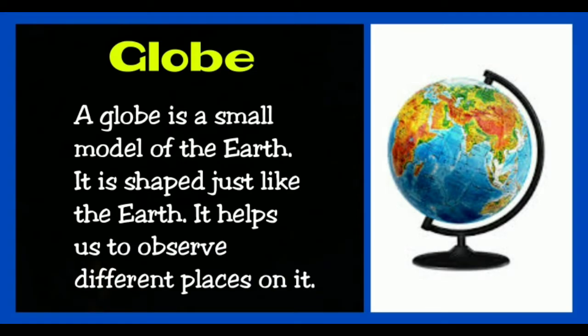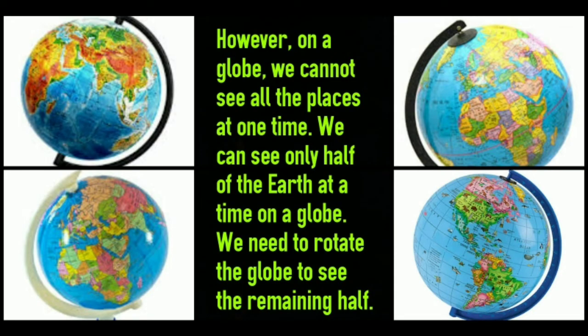A globe is a small model of the Earth. It is shaped just like the Earth and it helps us to observe different places on it. A globe is a very small model of our Earth and helps us to know many things about it. However, on a globe we cannot see all the places at one time — we can see only half of the Earth at a time on a globe.